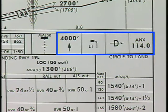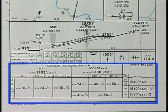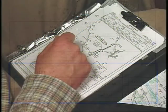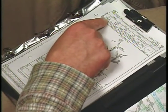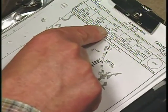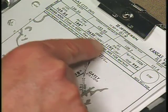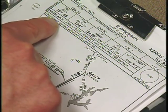Should a missed approach become necessary, this portion of the chart provides a quick reference to the initial up and out maneuver. Finally, review the minimums section to determine the minimum altitude and visibility for the approach. The pre-flight and in-flight review of the approach helps to reduce your workload during the actual approach and reinforces where to find the information quickly if needed.